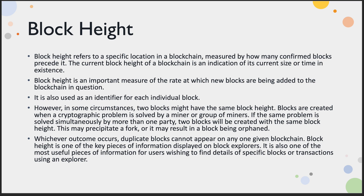Sometimes you may get a duplicate block — especially if two miners are working on the same problem at the same time. When two blocks are created with the same block height, you may accidentally fork that blockchain, or result in a block being orphaned. If a block is orphaned, no one gets paid for it. Duplicate blocks cannot appear on any one given blockchain — the first person to get that block height wins the race, even if it's by milliseconds, like shaving time at the Olympics.